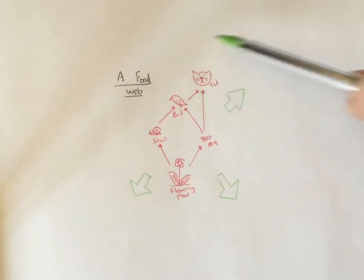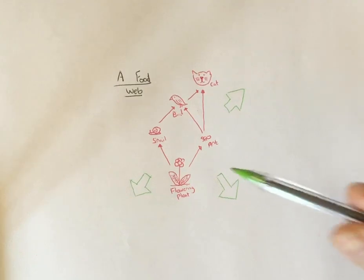And this is a simple food web. Now we can actually split up this food web into several food chains, three in fact.